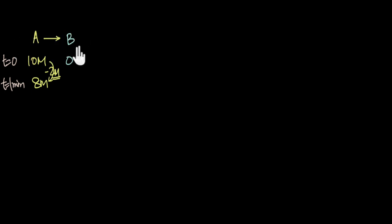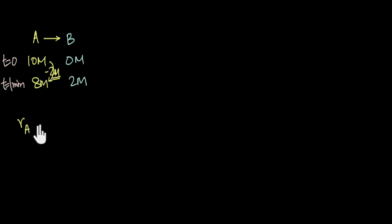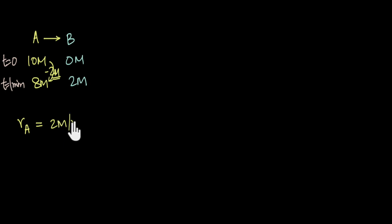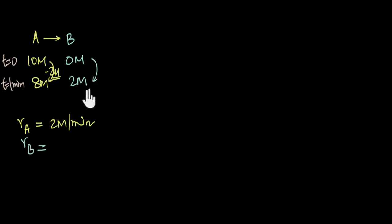Looking at this reaction, 1 molar of A will give 1 molar of B. So 2 molar of A on complete reaction will lead to the formation of 2 molar of B. Now if I ask you to calculate the rate of disappearance of A — 2 molar of A disappears in one minute, so the average rate of disappearance of A is going to be 2 molar per minute. Similarly, since 2 molar of B is formed in one minute, the rate of appearance of B is also going to be 2 molar per minute.